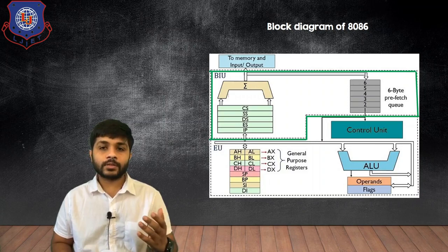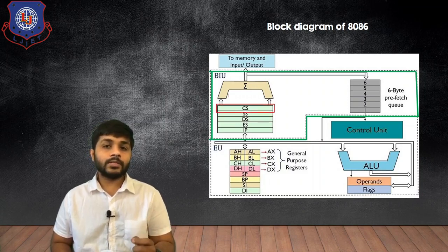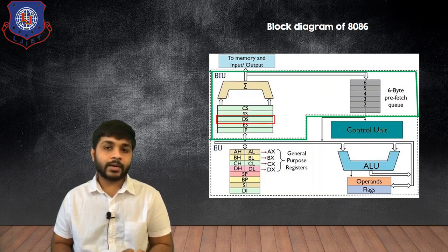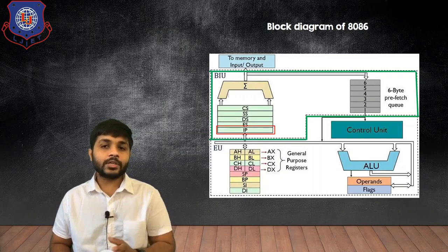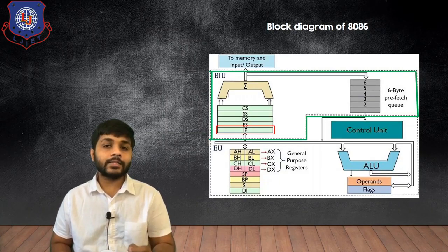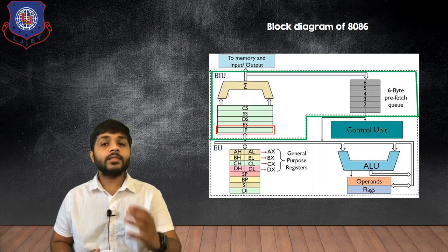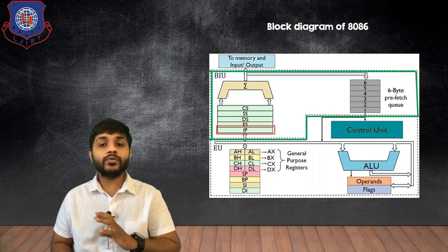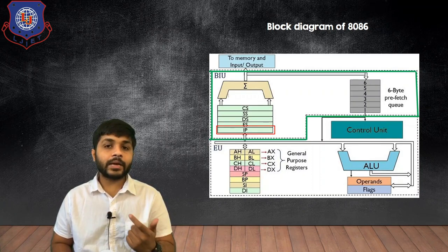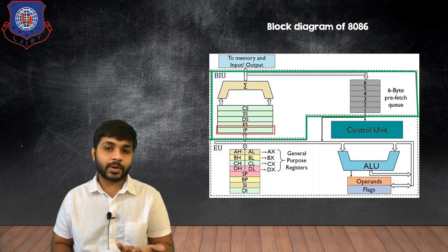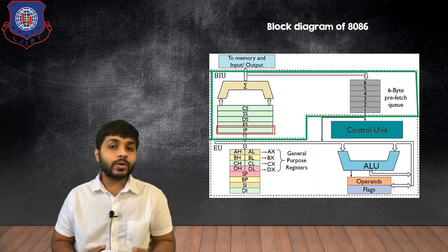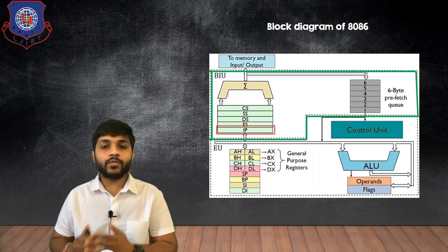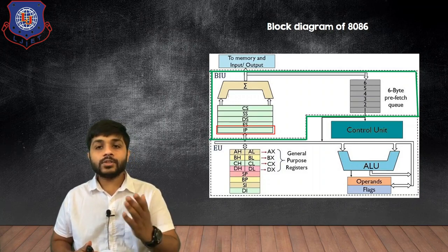In the Bus Interface Unit there are different registers: the Code Segment, Stack Segment, Data Segment, Extra Segment, and the Instruction Pointer. This segment register is used to store the starting address of the segment. For the 8086, the memory is divided into four segments: Code Segment, Data Segment, Stack Segment, and Extra Segment.